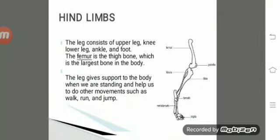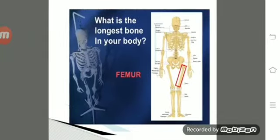The leg consists of the upper leg, knee, lower leg, ankle, and foot. The femur is the thigh bone, which is the largest bone in the body. The legs give support to the body when we are standing and help us walk, run, and jump. So the longest bone in our body is the femur.